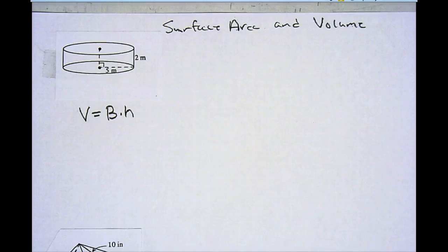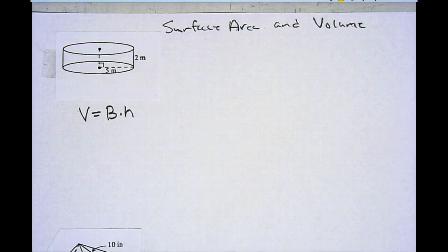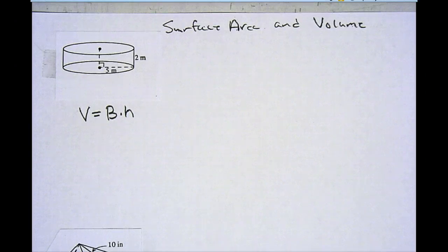When I find the volume of a prism — either a triangular or rectangular prism — or a cylinder, the formula I'm going to use is the area of the base times the height. I'm going to use the big B, because what I'm really trying to find is the area of the base — the number of squares in the base — and then I multiply that by the height.